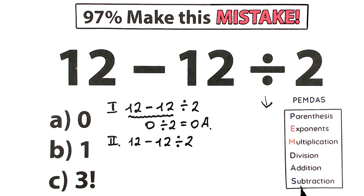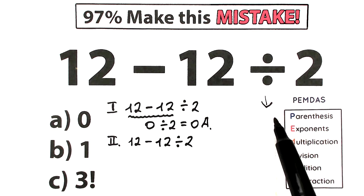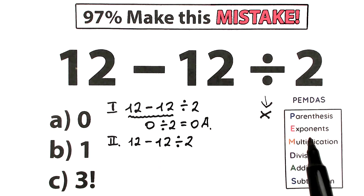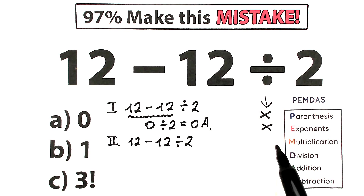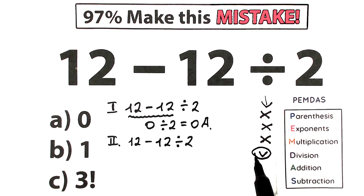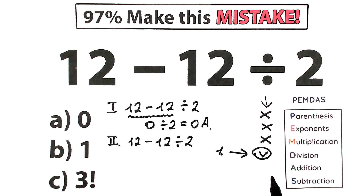Parentheses have the highest priority, and addition and subtraction have the lowest priority. Now let's scan what elements we have in our question. Parentheses? I don't see any, so we skip that step. Exponents — cubes, fourth power, fifth power? I don't see any of those, so we skip that as well. Multiplication and division? We don't have a multiplication sign, but we do have a division sign, so division is our first active step. Then addition and subtraction: we don't have addition but we do have subtraction, so subtraction is our second step.